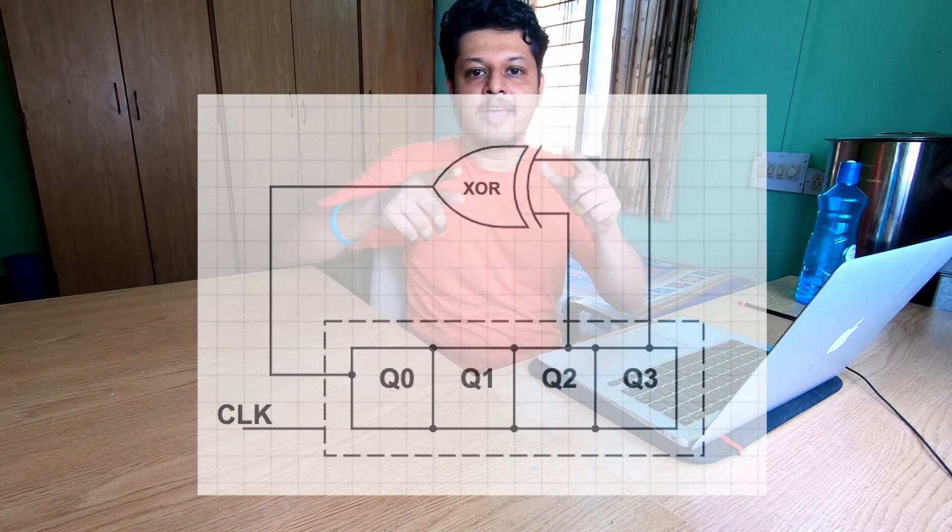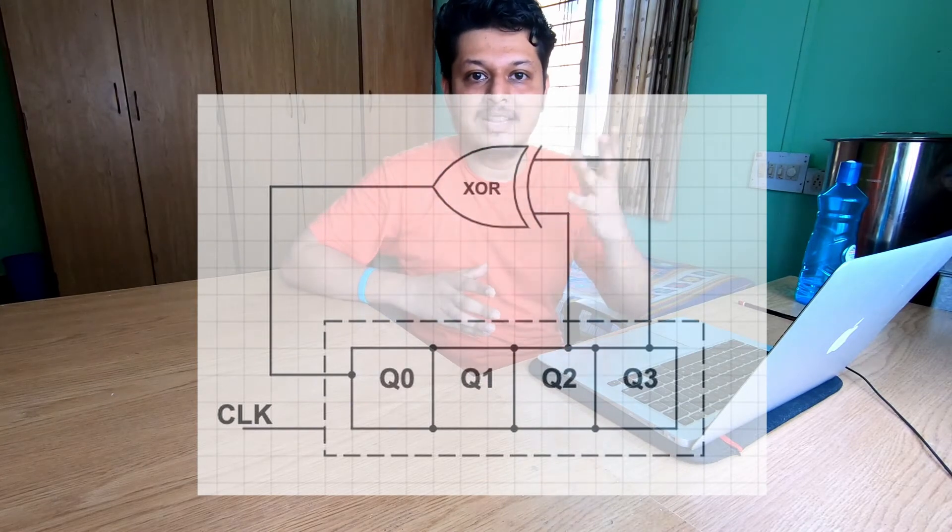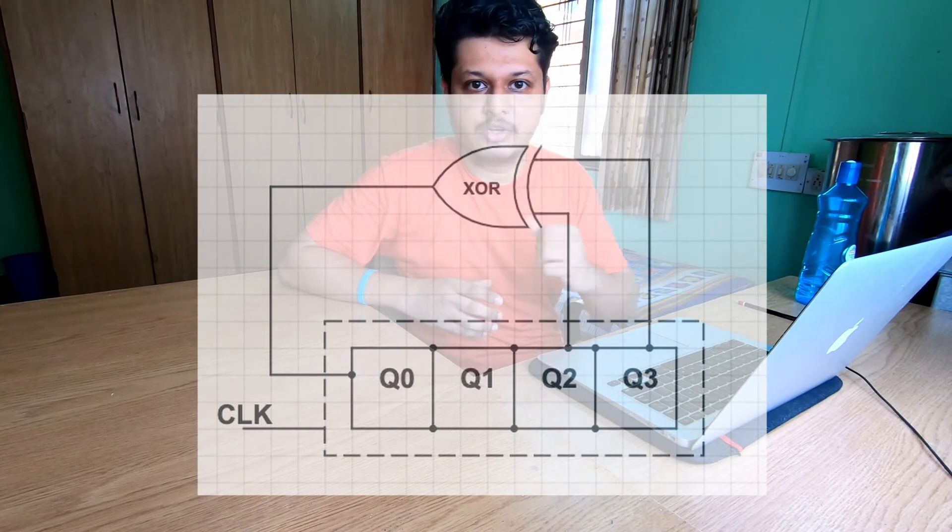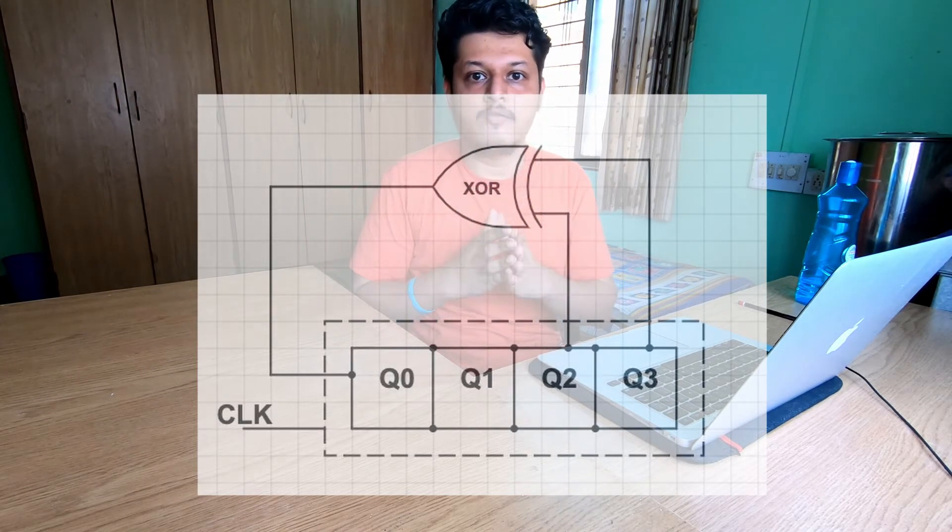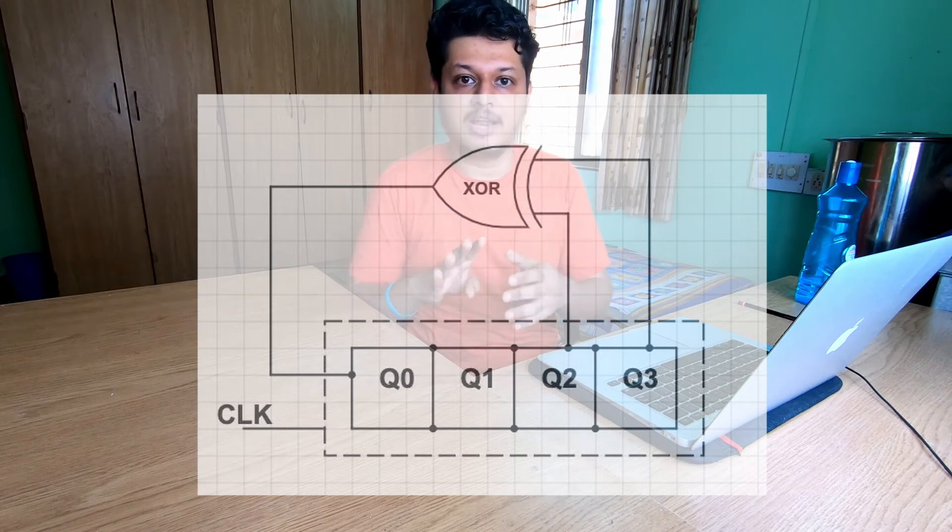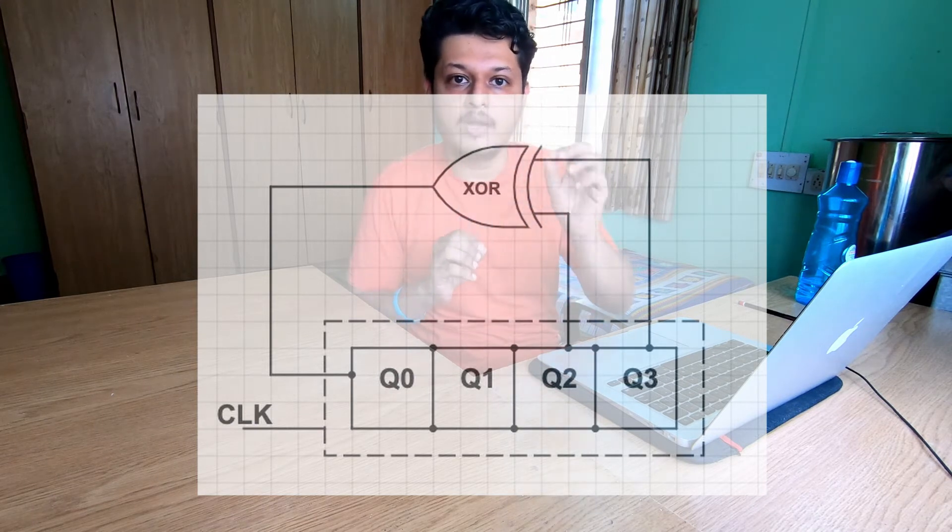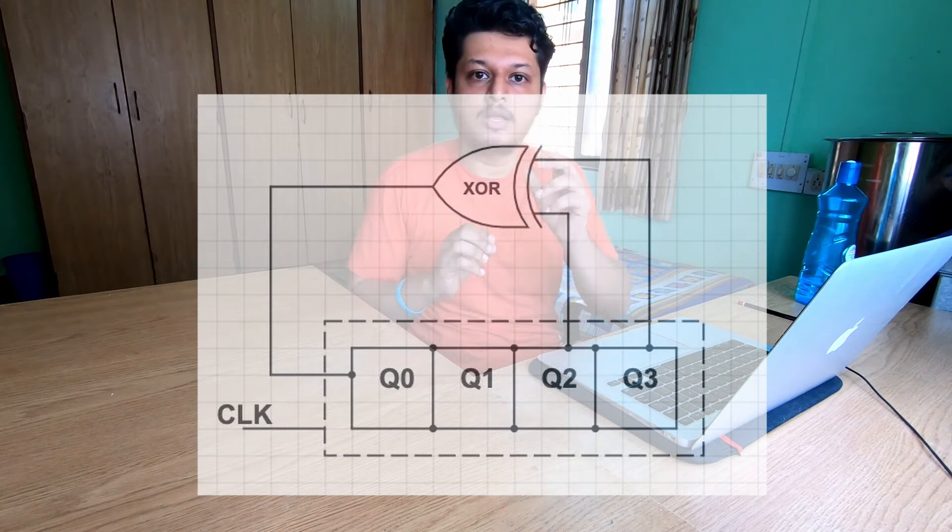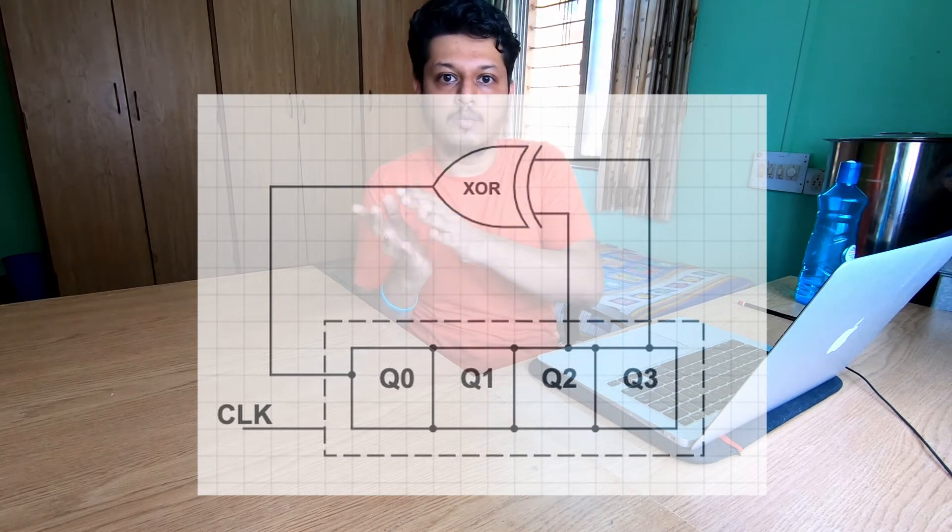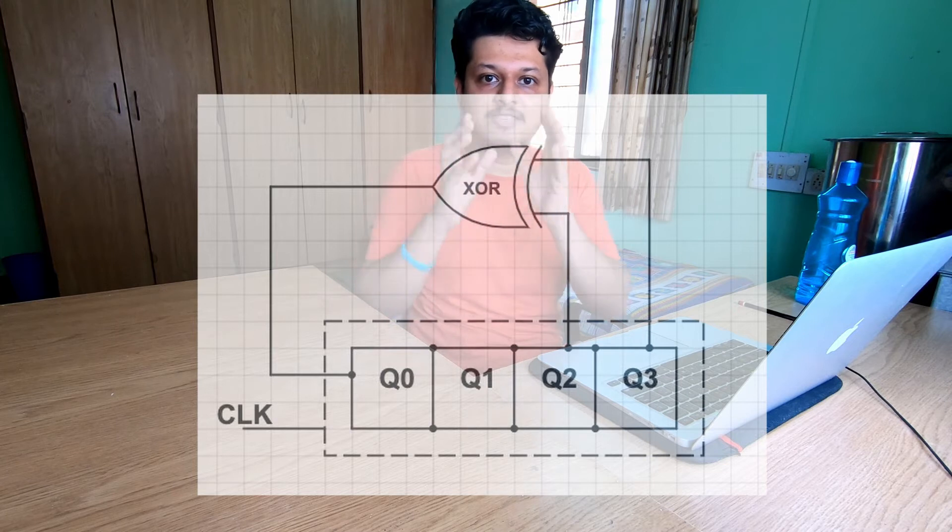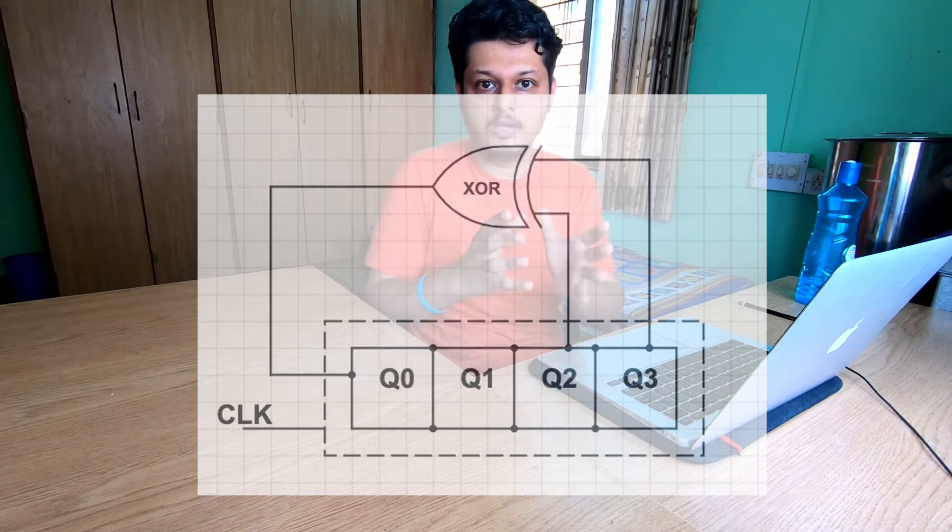In this video I will be talking about one such method using 7.4 series TTL ICs. Here is the logic diagram for 15 length PRBS generation. In this case we use a linear feedback shift register where we take a shift register of bit length 4 and provide feedback from bit positions q2 and q3. That feedback is provided to bit position q0, and this feedback is XOR feedback.